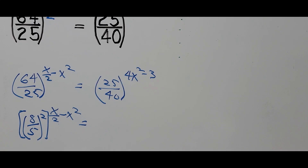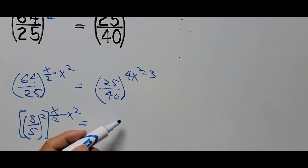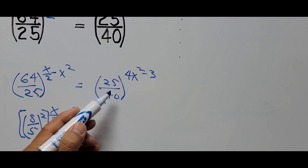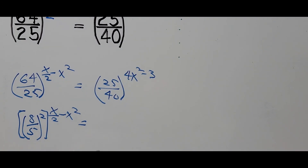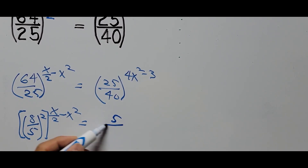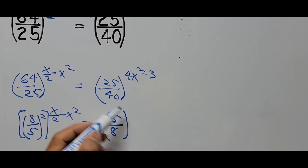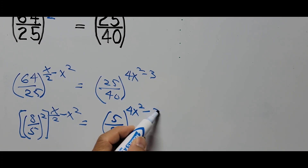On the right side of the equation, the base will be simplified the same way — reduced to its lowest term. For 25 over 40, the common factor is 5. So 25 divided by 5 is 5, and 40 divided by 5 is 8, giving us 5 over 8 raised to the power of 4x squared minus 3.